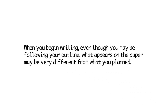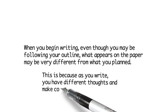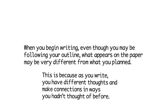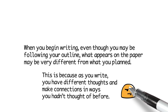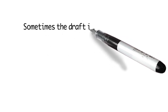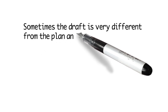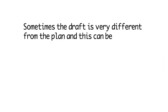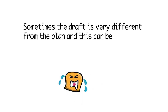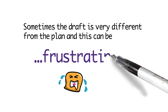But when I begin writing, even though I'm following the outline, what appears on the paper may be very different from what I planned to write. This is because as you write you have different thoughts and you make new connections in ways you hadn't thought of before, and you're reading different things. So what appears is very different. When you write your draft it's often very different from the plan, and many writers find this frustrating.